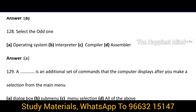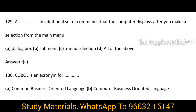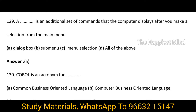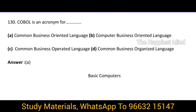Question 128: Select the odd one out — it is obviously option A: Operating system. Question 129: Which is an additional set of commands that the computer displays after you make a selection from the main menu? It is option A: The dialogue box. Question 130: COBOL is an acronym for which? It is option A: Common Business Oriented Language.